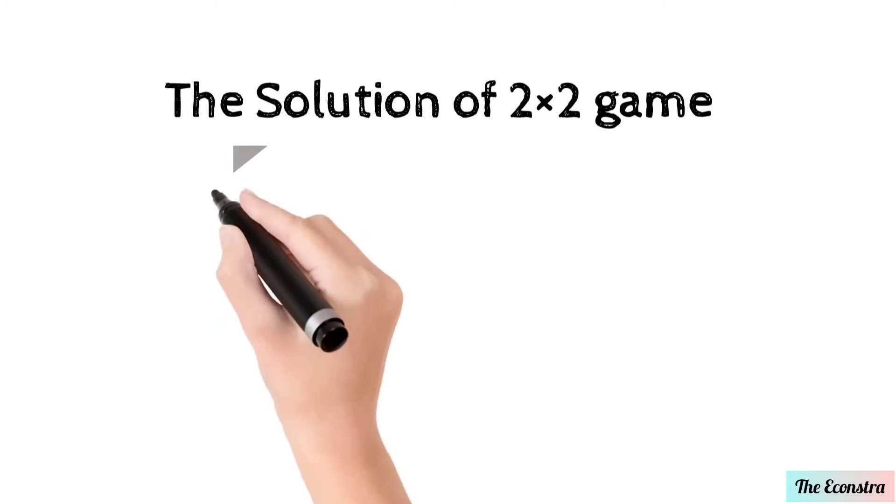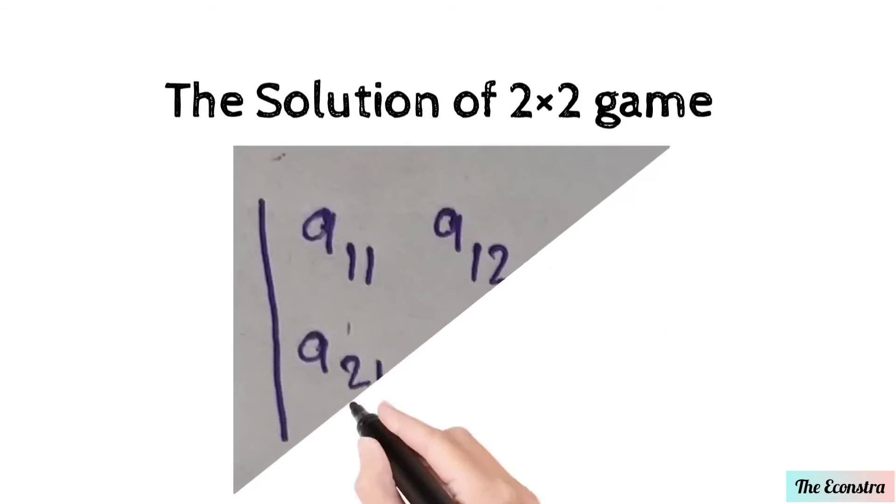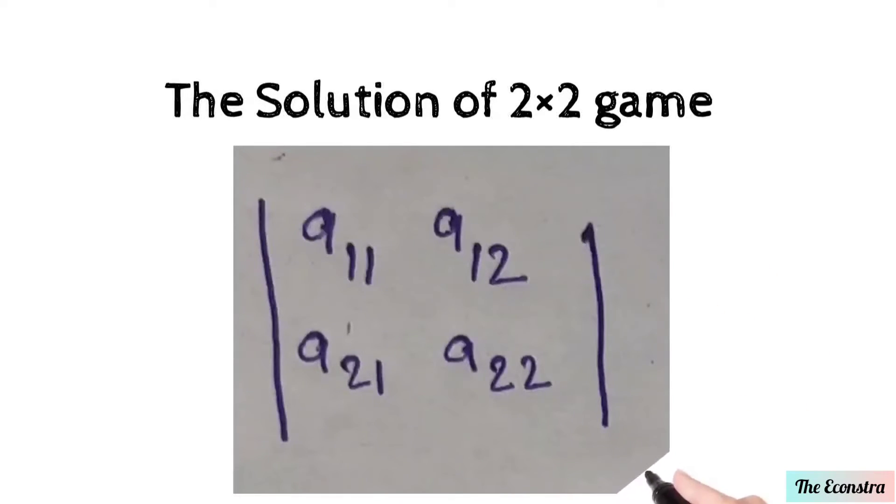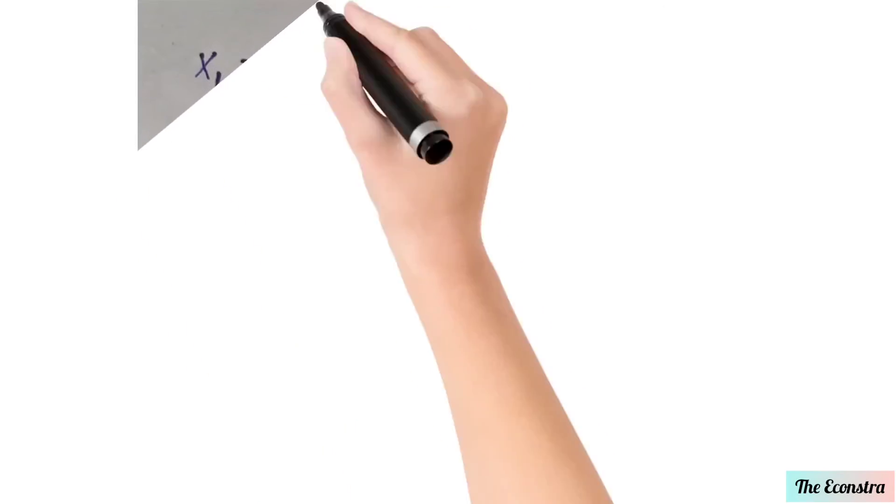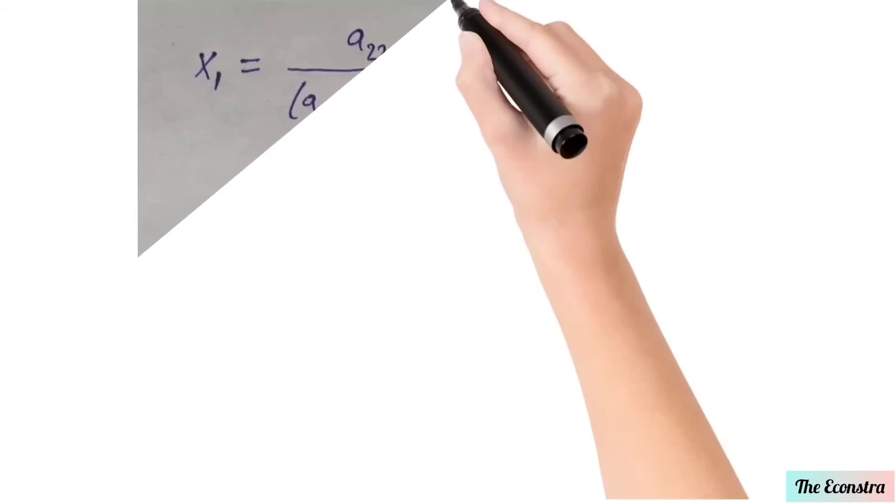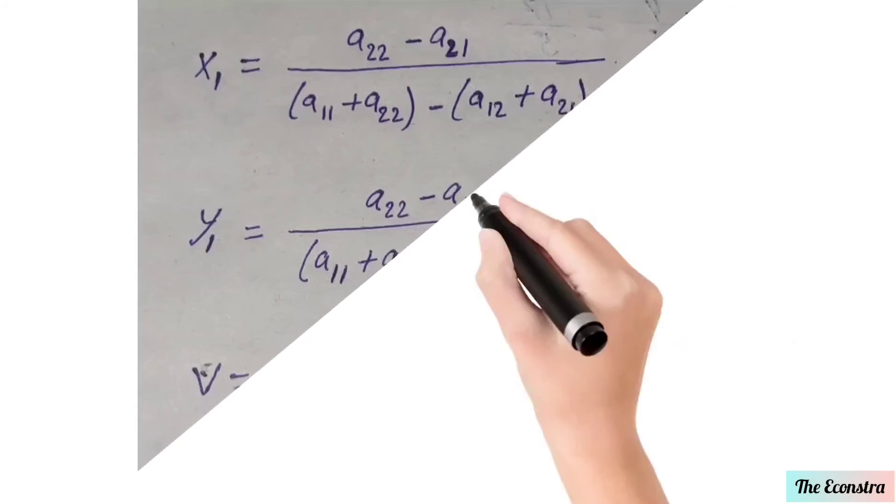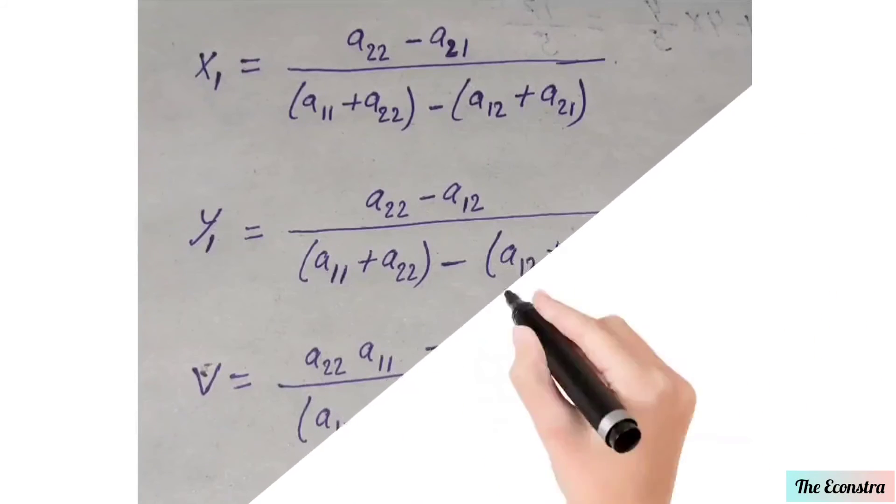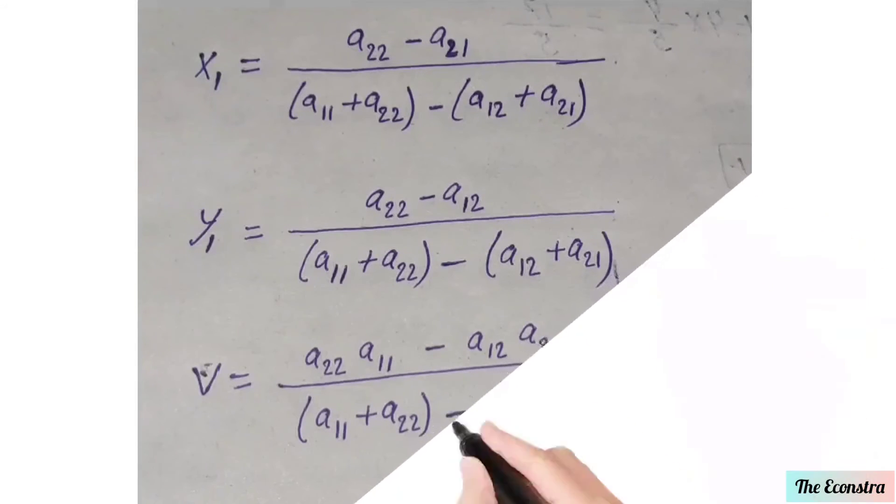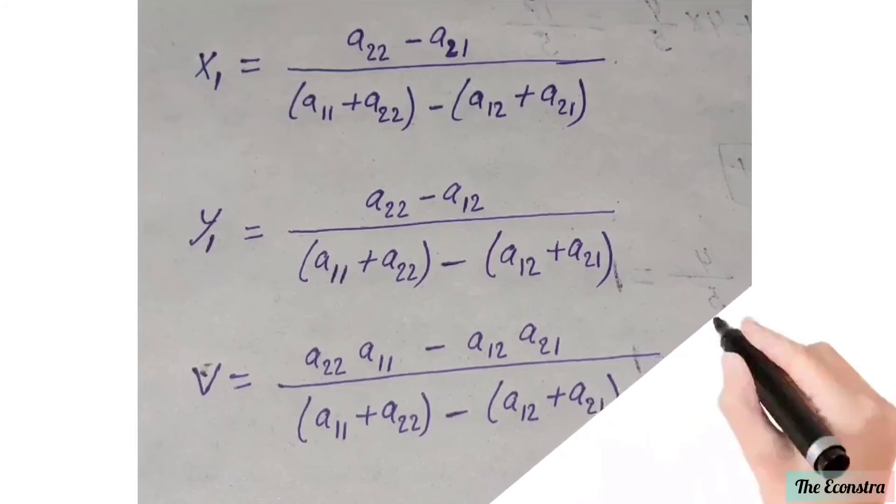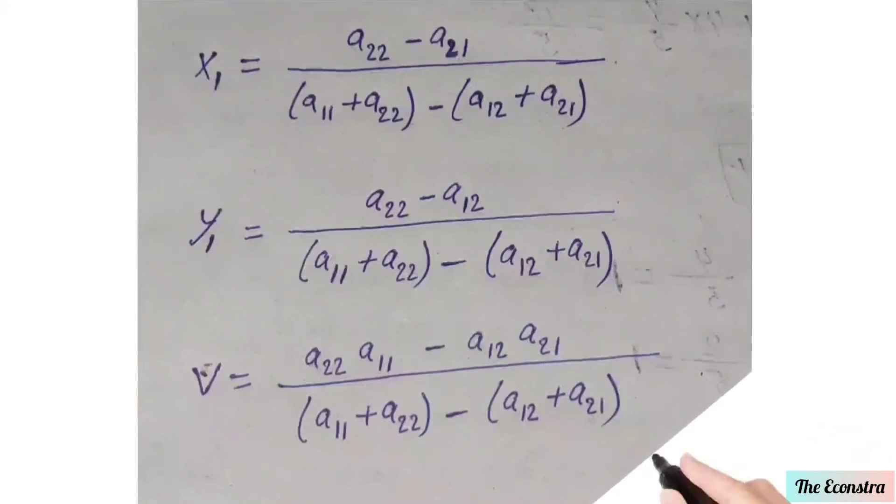The solution of 2 by 2 game. Here A11, A12, A21 and A22. Here the formation of 2 by 2 game. X1 equals A22 minus A21 by A11 plus A22 minus A12 plus A21. Here the value of V: A22 into A11 minus A12 plus A21 by A11 plus A22 minus A12 plus A21.